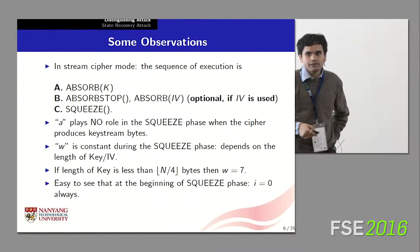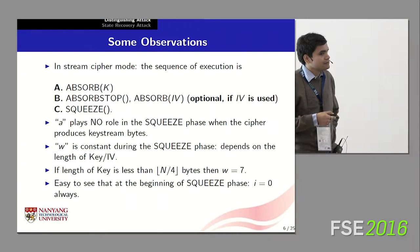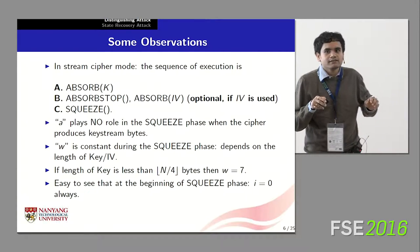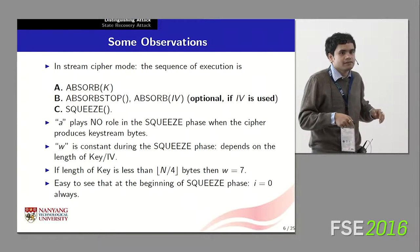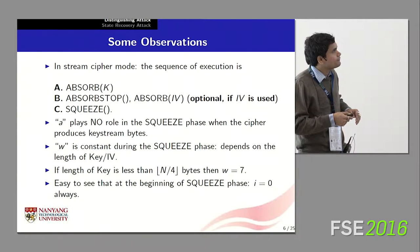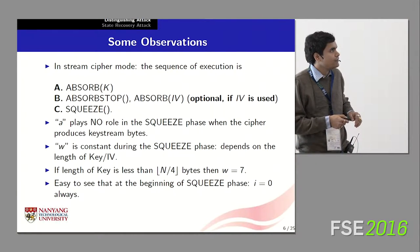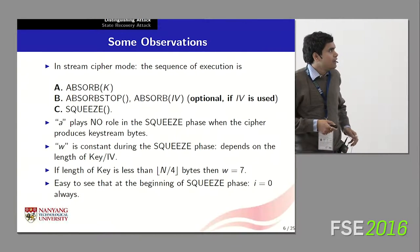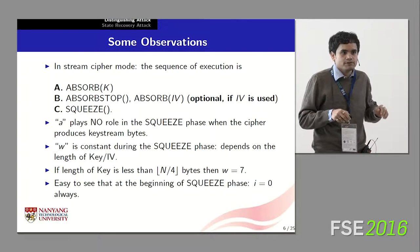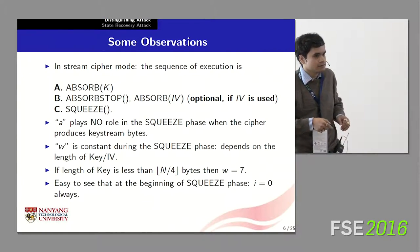In the basic stream cipher mode of operation, it follows three basic steps: Absorb, then Absorb-Stop and Absorb-IV, and then Squeeze. The Absorb phase absorbs the information present in the secret key and modifies the array S accordingly. If an IV is required, the IV information is absorbed into the state nibble by nibble; if not, that step may simply be ignored. Squeeze is the module responsible for producing the output keystream bytes, and we will be concentrating on the Squeeze module throughout this presentation.